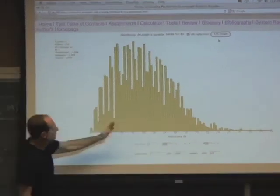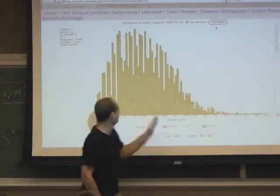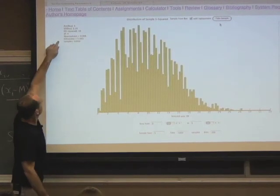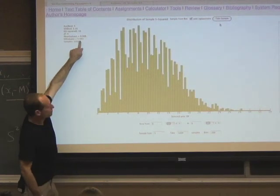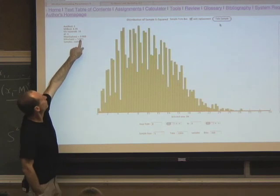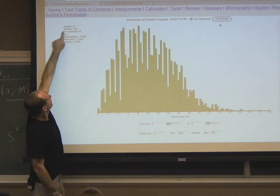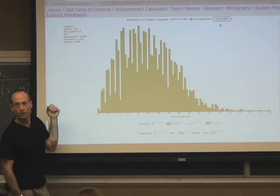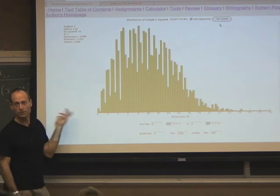And if you look at what happens, sometimes you get a very big value. Typically, you get kind of a moderate value. The mean of those 10,000 values that we got, 10,000 values of S squared, was just a little bit less than 10. The expected value is 10, right? The square of the SD of the box.